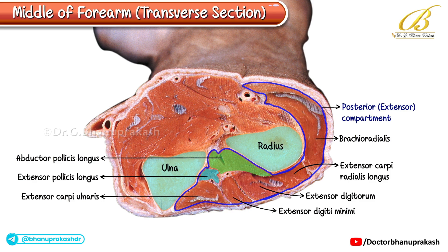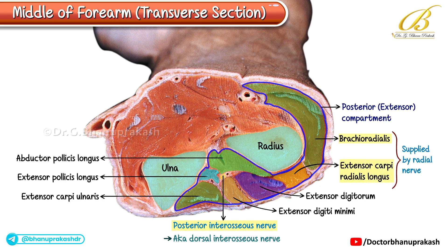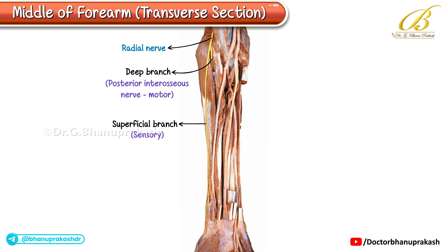Between the superficial and deep muscle layers, there lies another neurovascular bundle consisting of the posterior interosseous nerve and its accompanying vessels. The posterior interosseous nerve, also known as the dorsal interosseous nerve, is the main nerve of the extensor compartment. It supplies most of the extensor muscles, except the brachioradialis and extensor carpi radialis longus, which are supplied directly by the radial nerve. This nerve is actually the continuation of the deep branch of the radial nerve. The radial nerve divides into two terminal branches: the superficial branch, which is sensory, and the posterior interosseous nerve, which is motor.